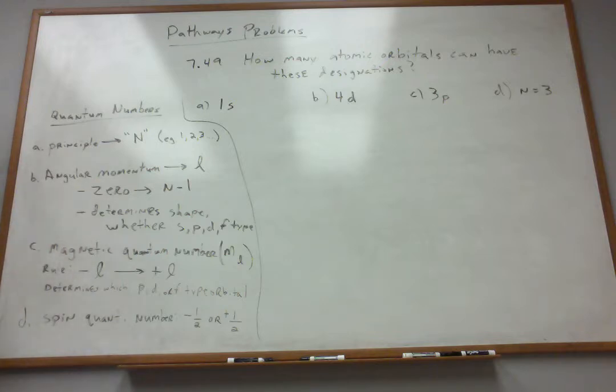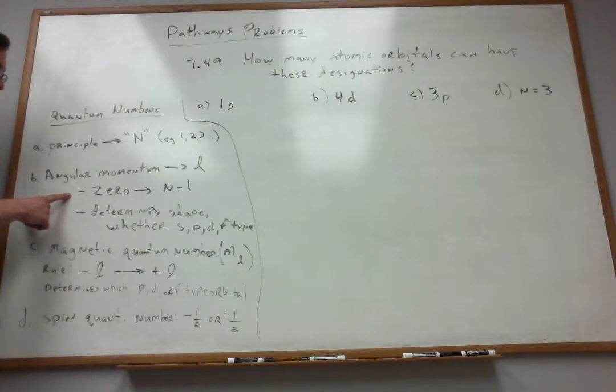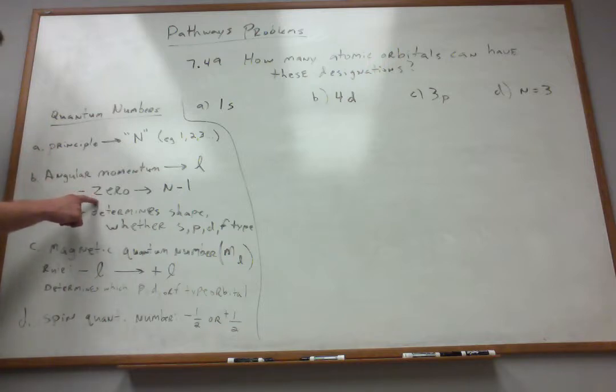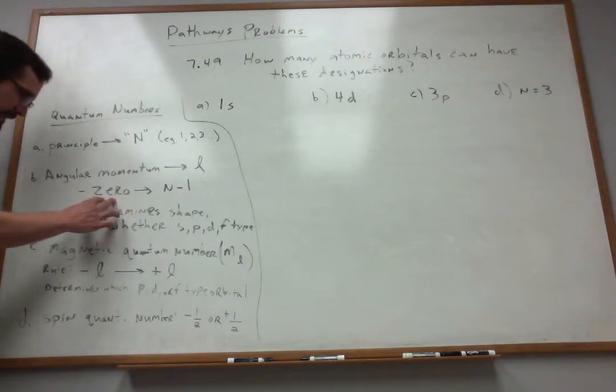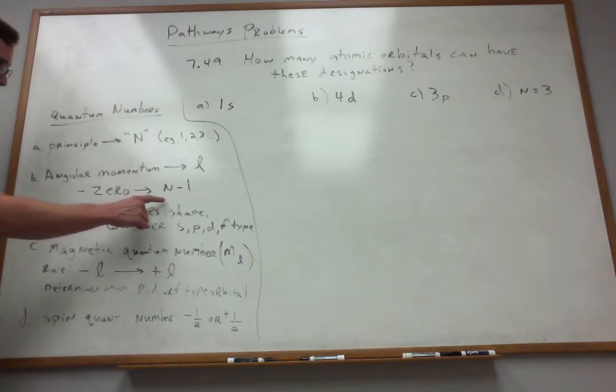Now, what rules can we use to assign the angular momentum quantum number? Well, the rule is that you're allowed to assign integer values for the angular momentum number starting at 0 and going all the way to N minus 1.